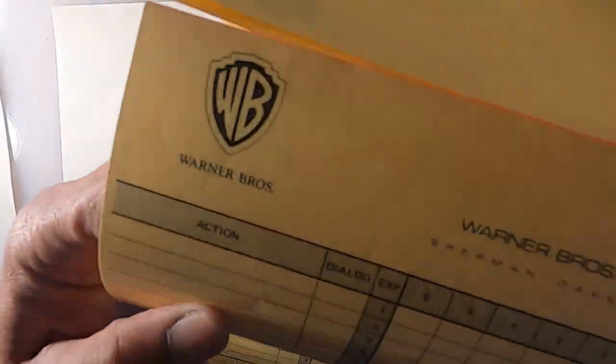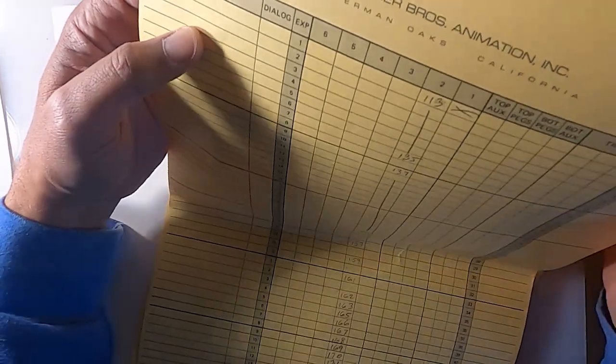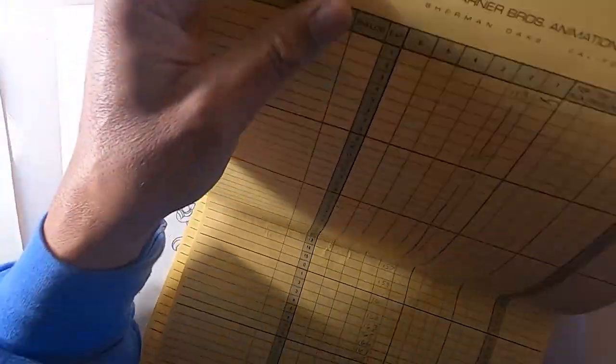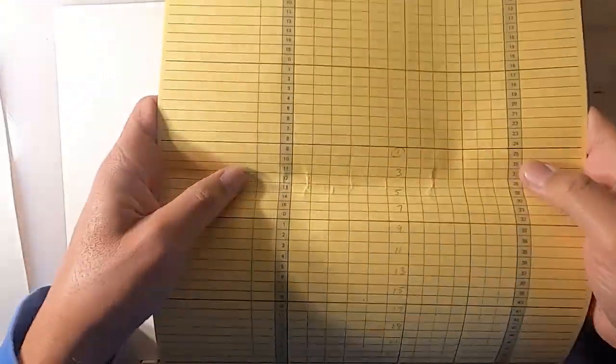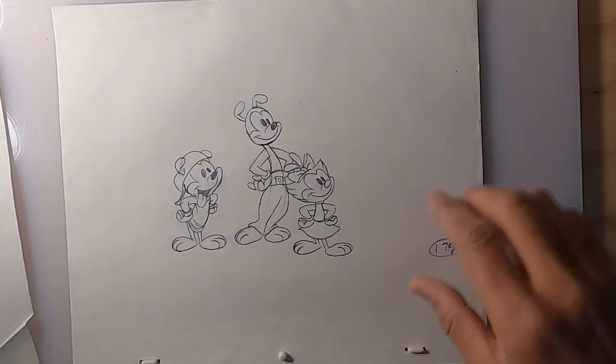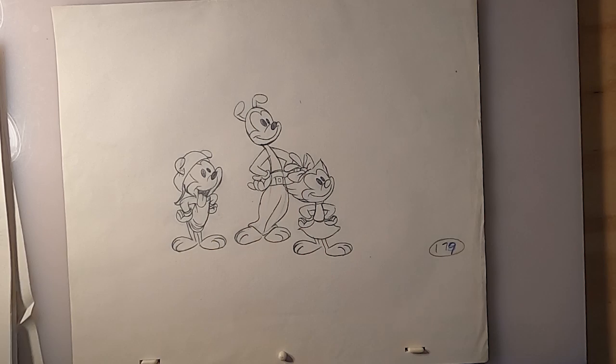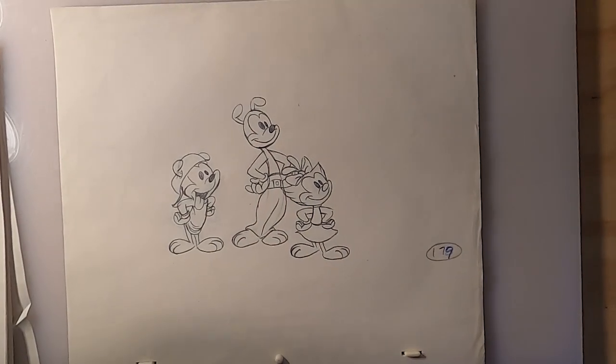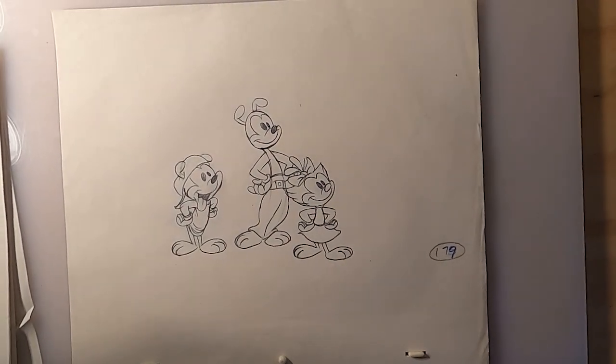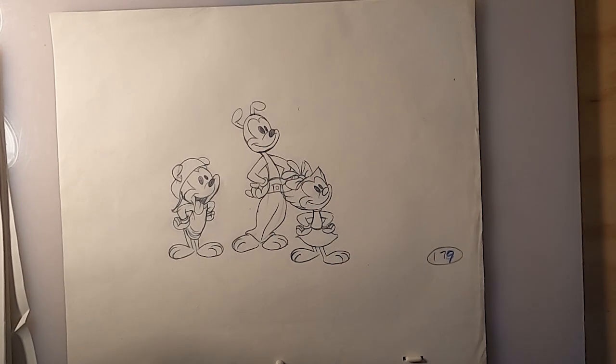So, that was how I animated Yakko, Wacko, and Dot running into a scene for Animaniacs. This was not in a show. This was just development work as they were figuring out who the characters were. So, there's your Animaniacs animation lesson for today. And we'll do another one next time. Until then, keep drawing.